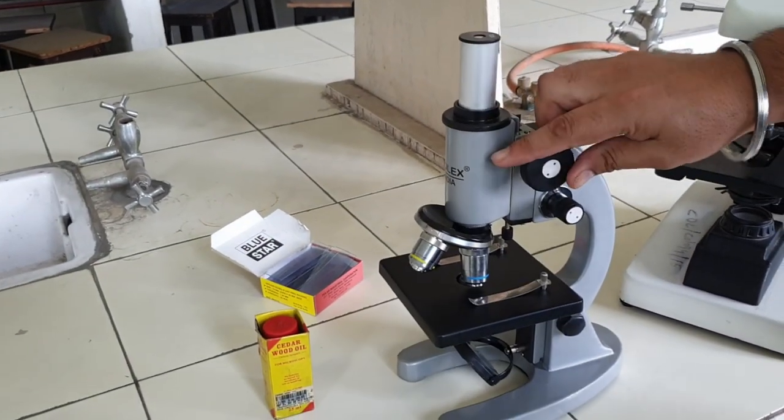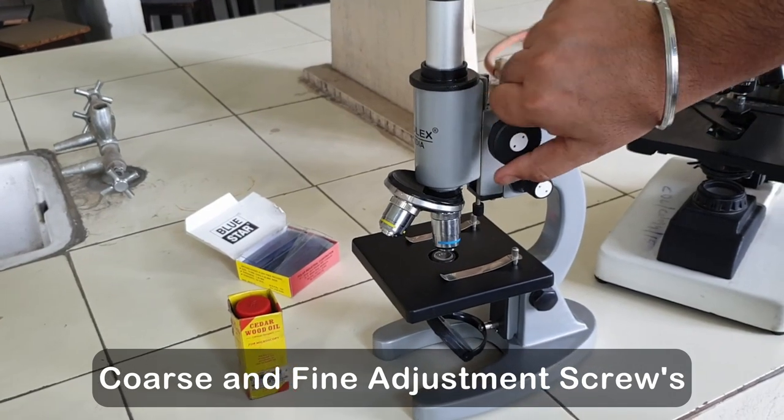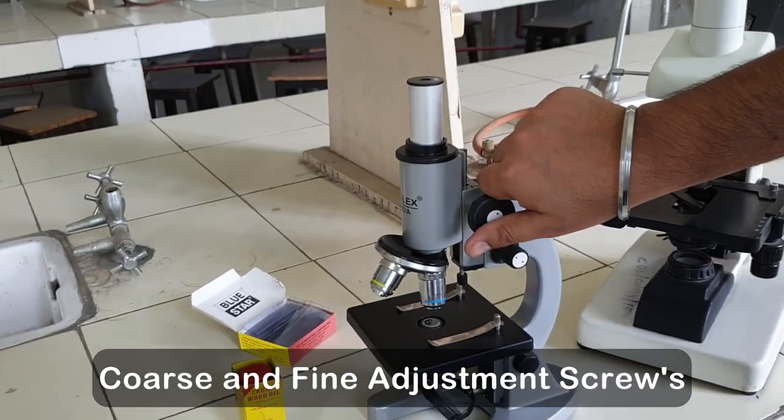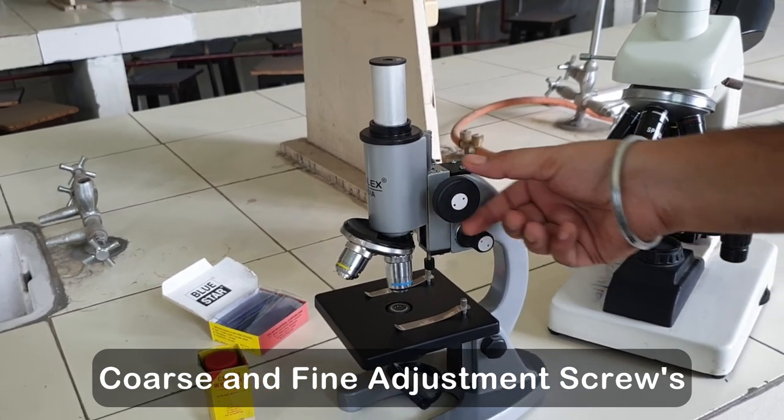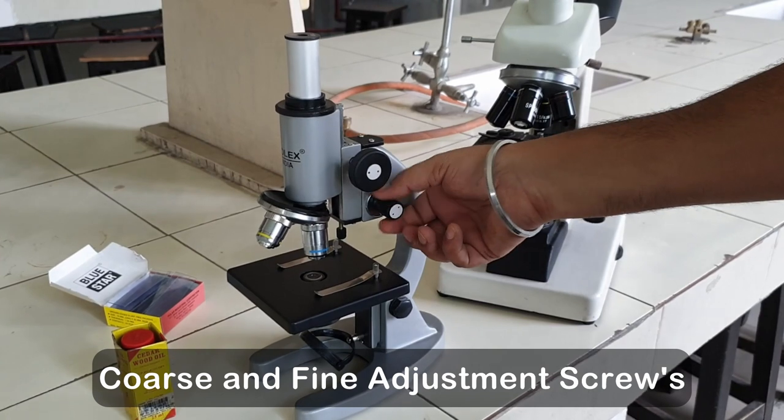These are the adjusting screws. This is a coarse adjusting screw, used for rough focusing. This is a fine adjusting screw.